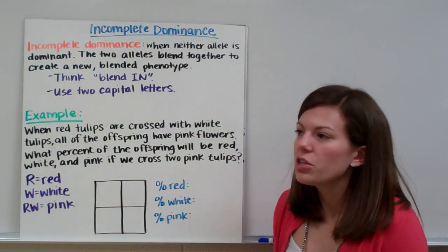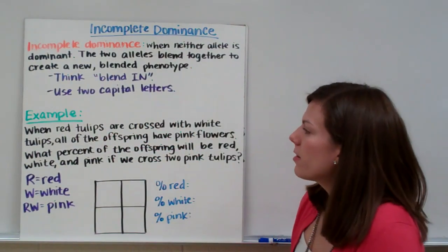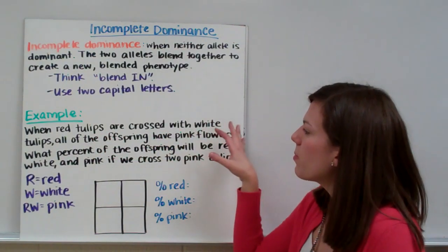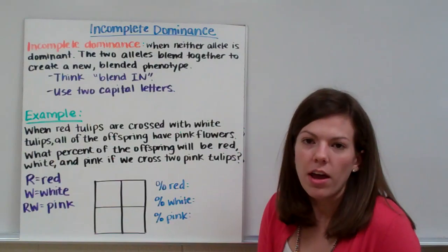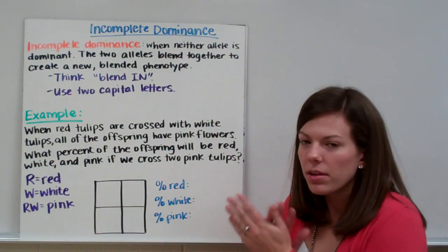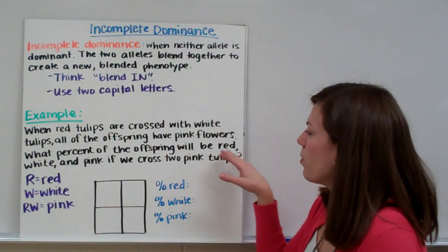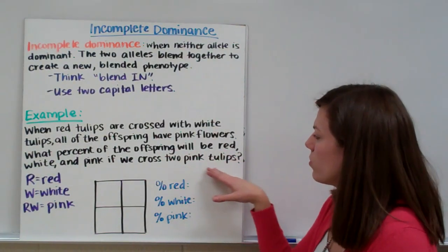For incomplete dominance, you use two capital letters since neither one is recessive. Let's do an example. When red tulips are crossed with white tulips, all of the offspring have pink flowers because red and white blended together make pink. What percent of the offspring will be red, white, and pink if we cross two pink tulips?